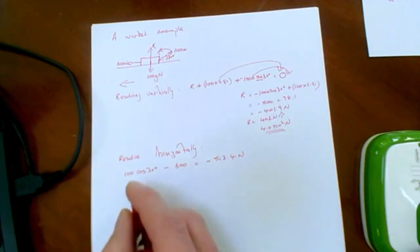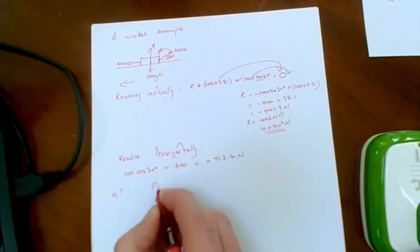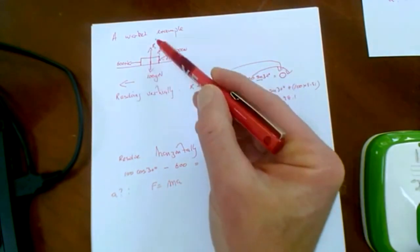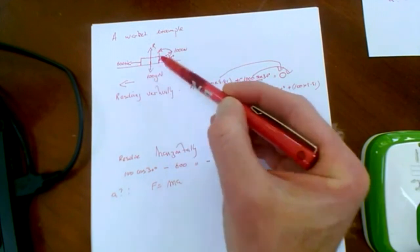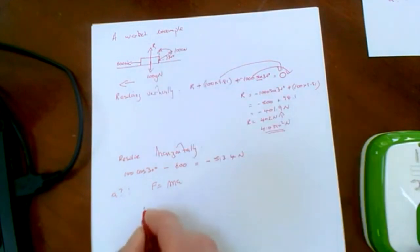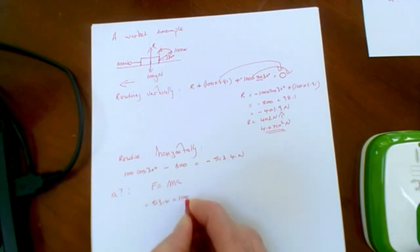And so if we, for example, wanted the acceleration of this, we'd say well Newton's second law I think was F equals MA. We have established that there is no, or our condition was, there was no vertical force, so that it wasn't accelerating in that direction. So horizontally then we have a force of minus 513.4 acting on 100 kilograms. That's our acceleration.